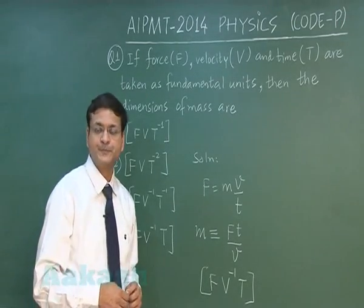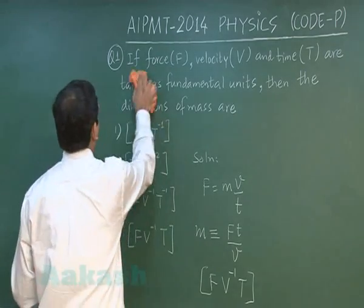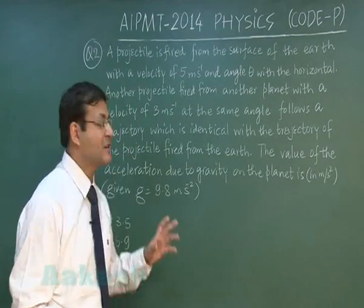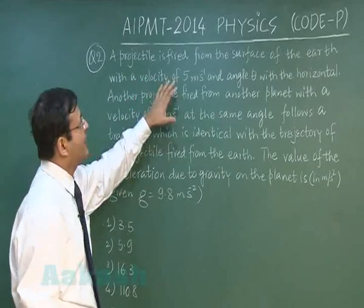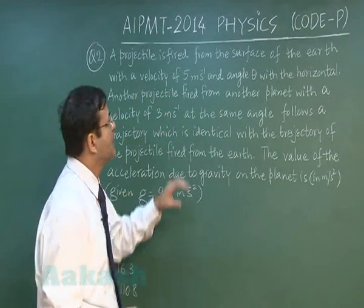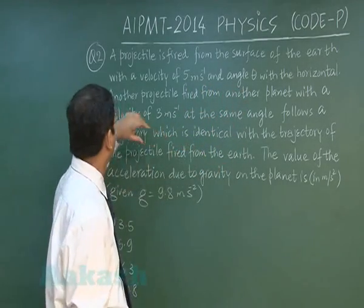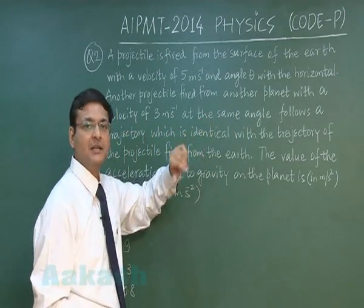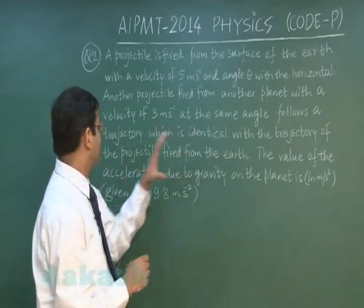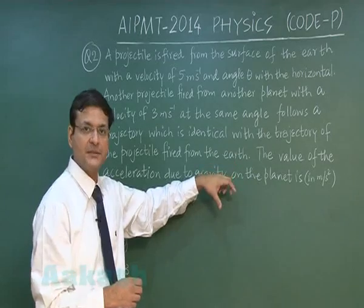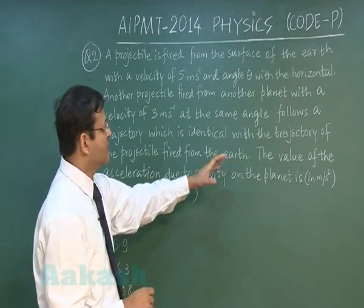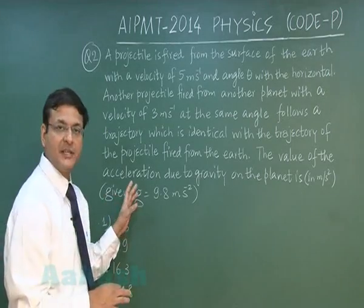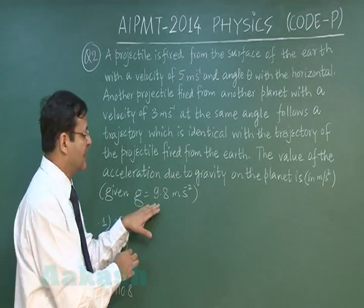Let us discuss question number 2. In this question, a projectile is fired from the surface of the earth with a velocity of 5 m/s at angle theta with the horizontal. Another projectile fired from another planet with a velocity of 3 m/s at the same angle follows a trajectory identical to the projectile fired from the earth. You have to find the acceleration due to gravity on the planet, given that g on Earth is 9.8 m/s².